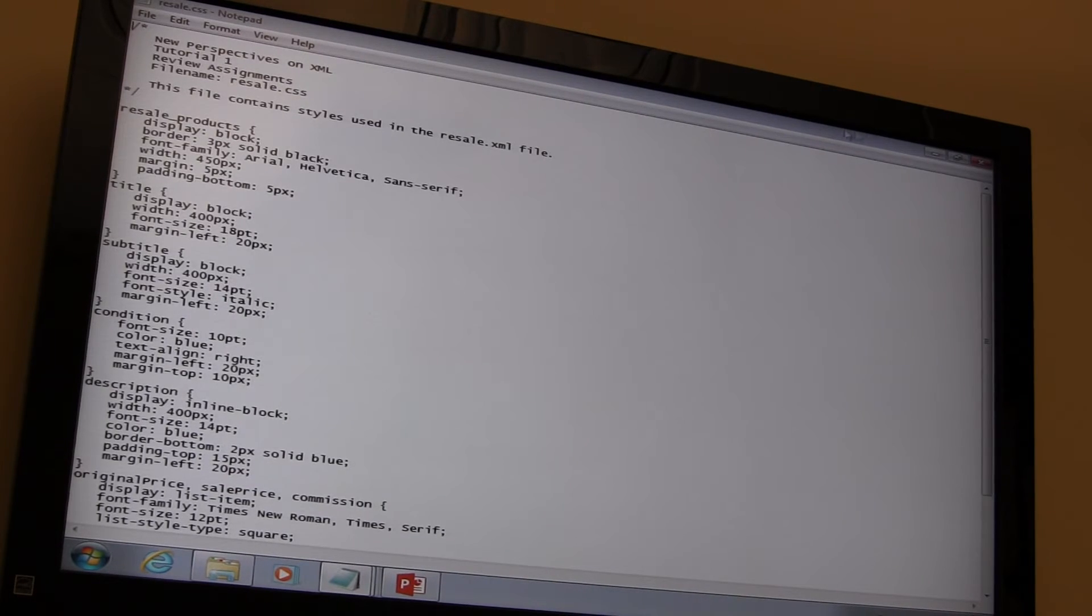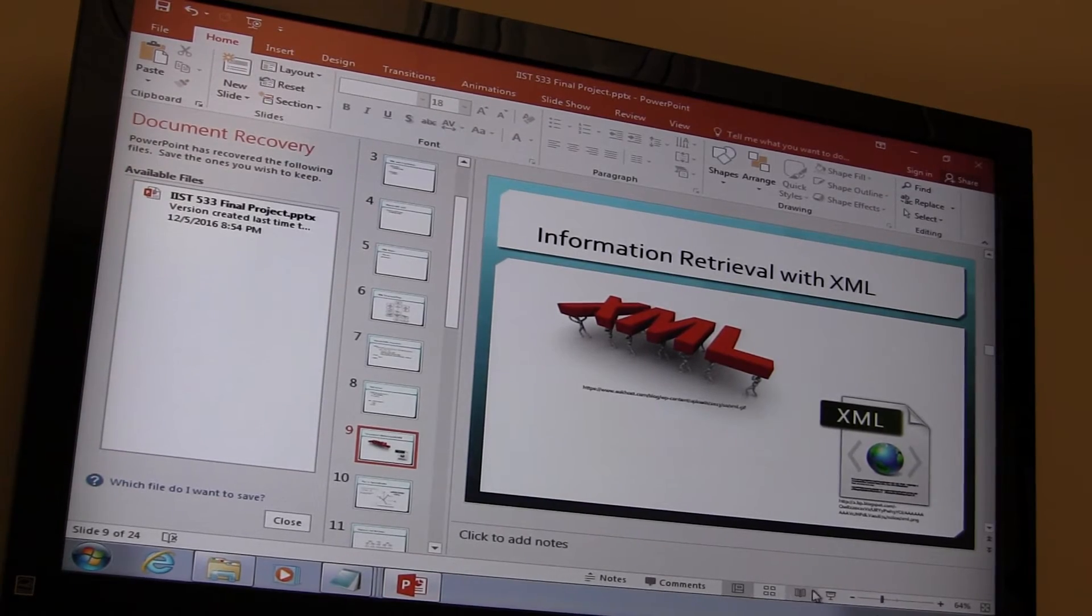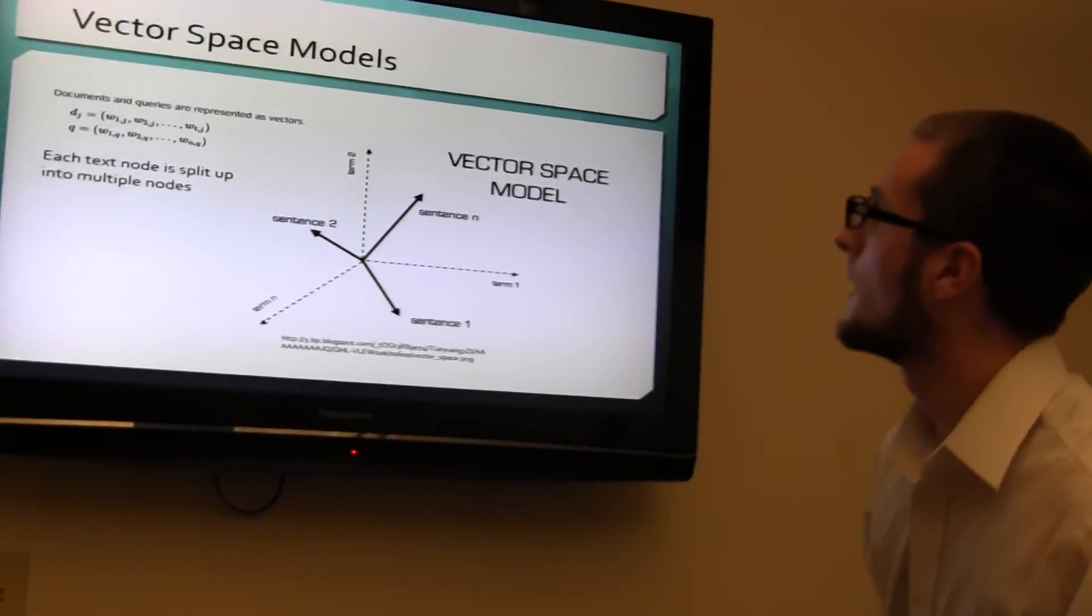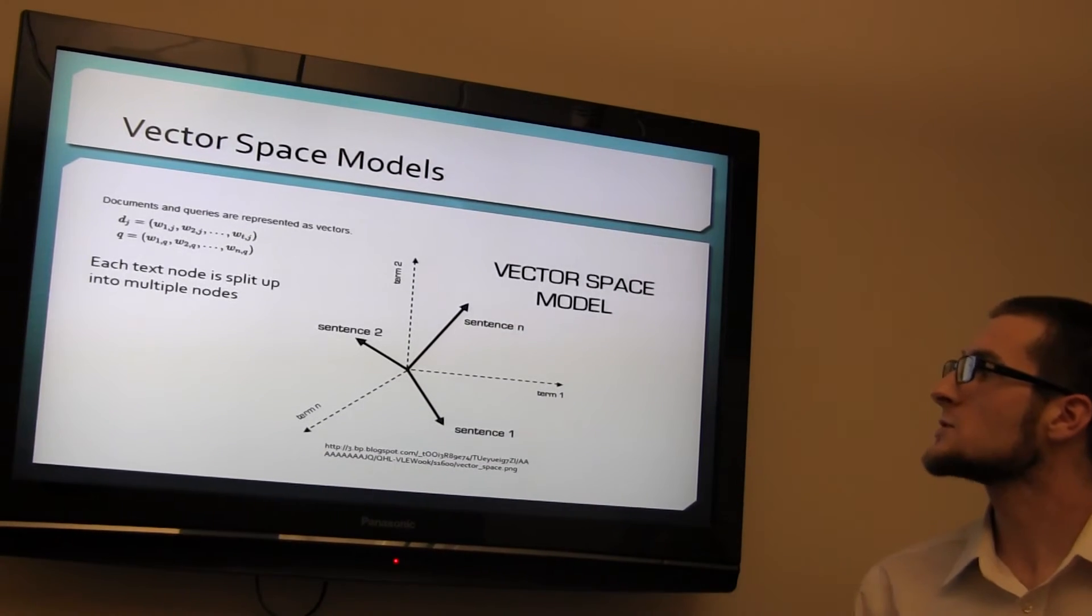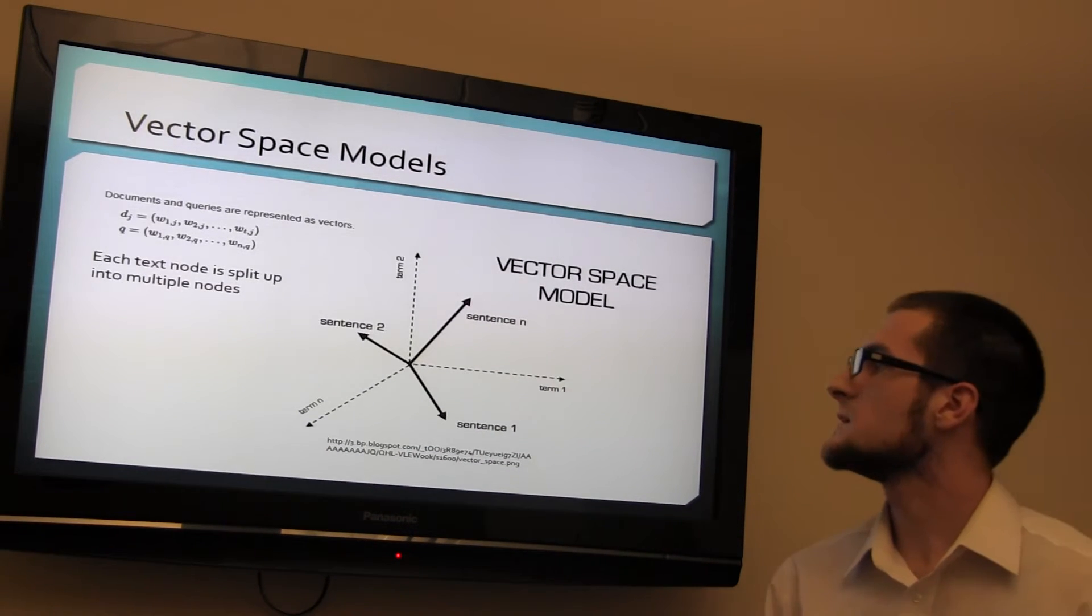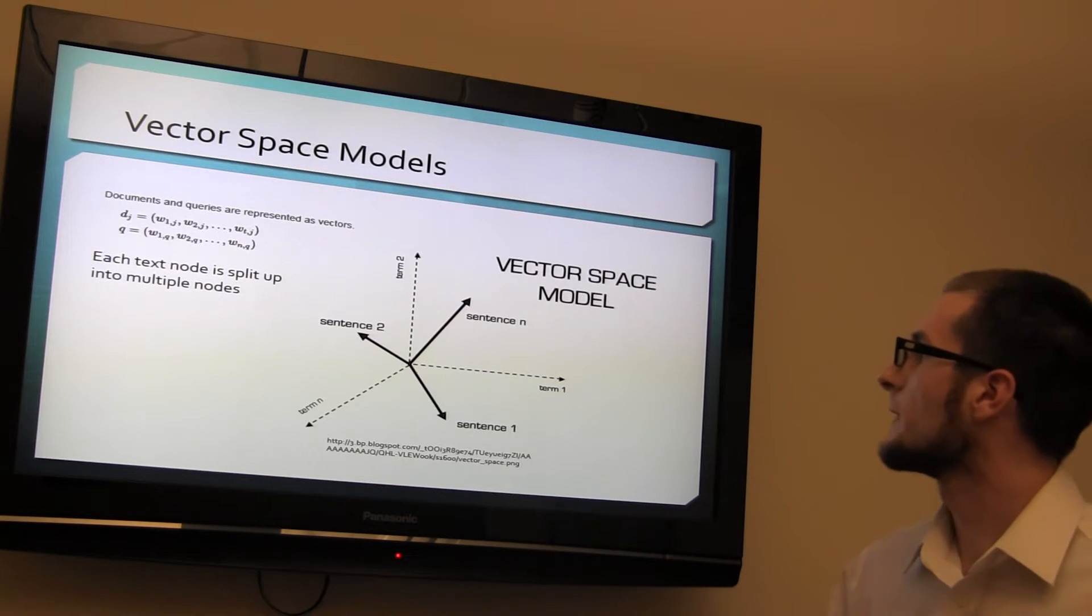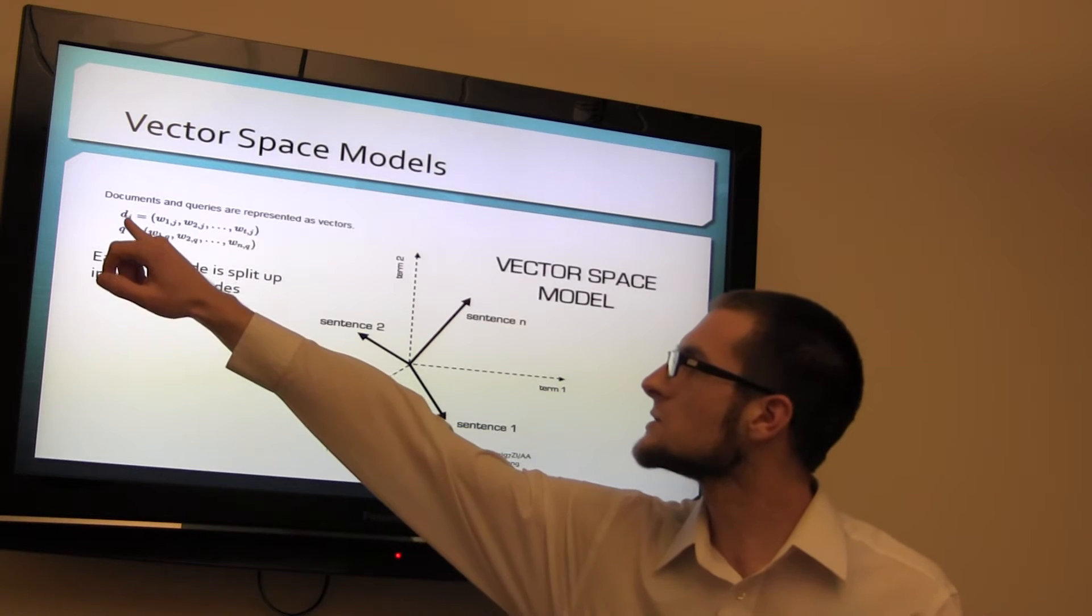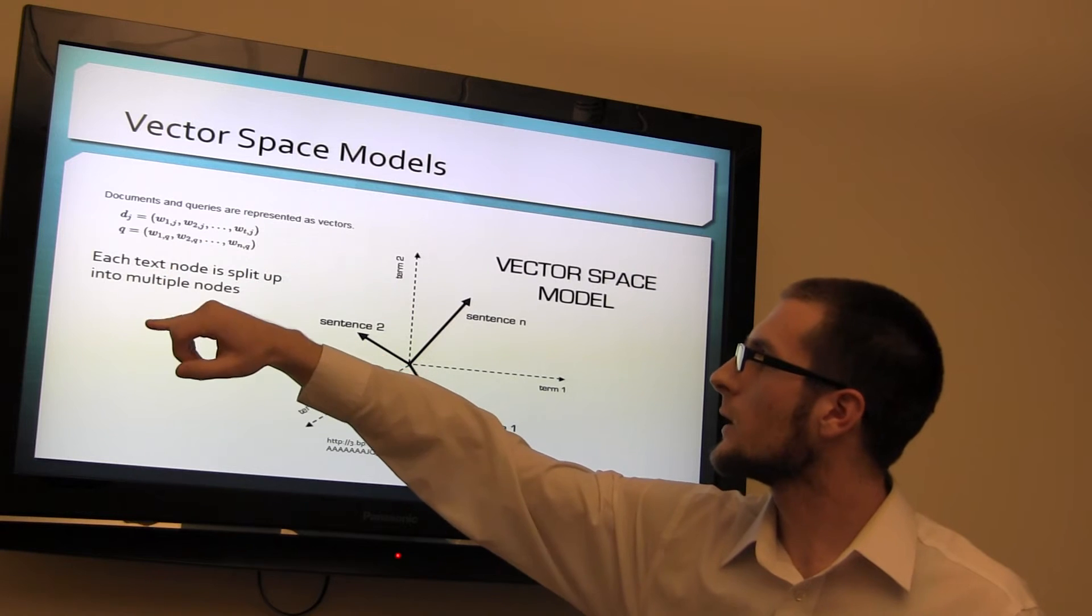Alright, now let's get into the good stuff. A few things we learned in class you can relate to XML. The vector space model, which is where each node is split up into multiple nodes to see where they come together and split. Documents and queries are represented as vectors. This is the formula for each. We have the document one, which is of the query, and then the query one.